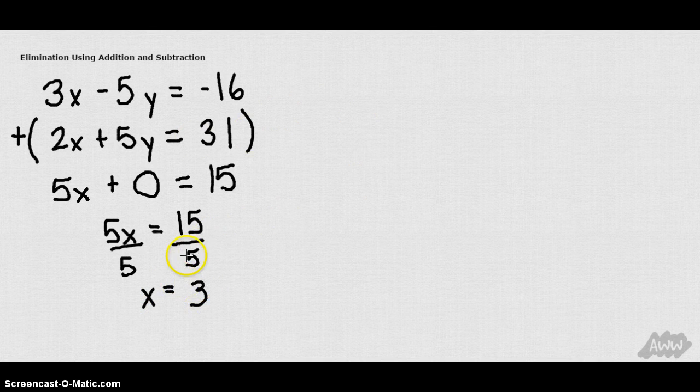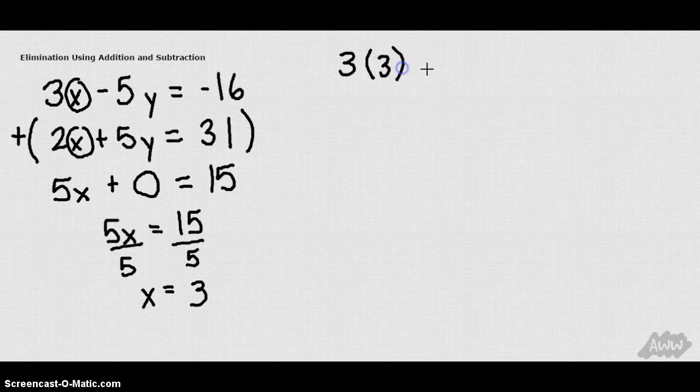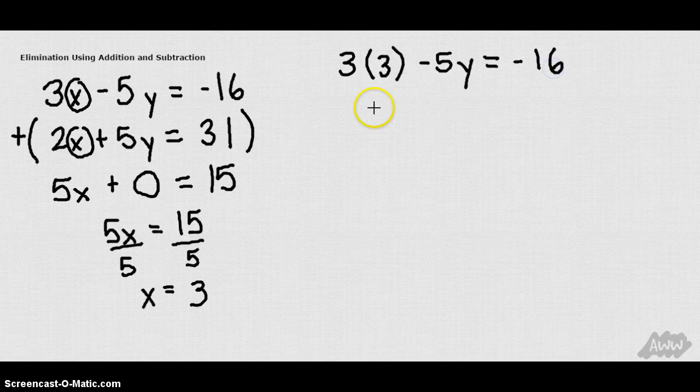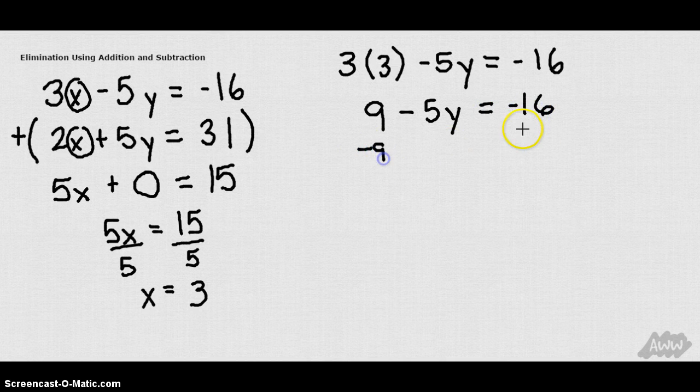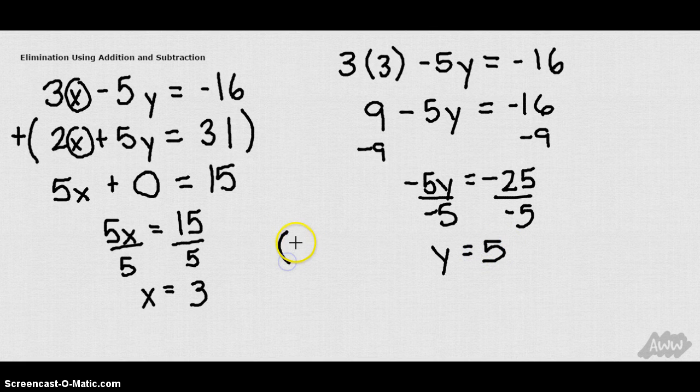Now I can put that 3 in for any x up here. Either of these two x's. We'll just go with the top one. 3 times 3 minus 5 times y equals negative 16. 9 minus 5y equals negative 16. Let's subtract 9 from both sides. We get negative 5y equals negative 25. Divide both sides by 5 to get y by itself. We have y equals positive 5. So my solution for this set of equations is 3, 5.